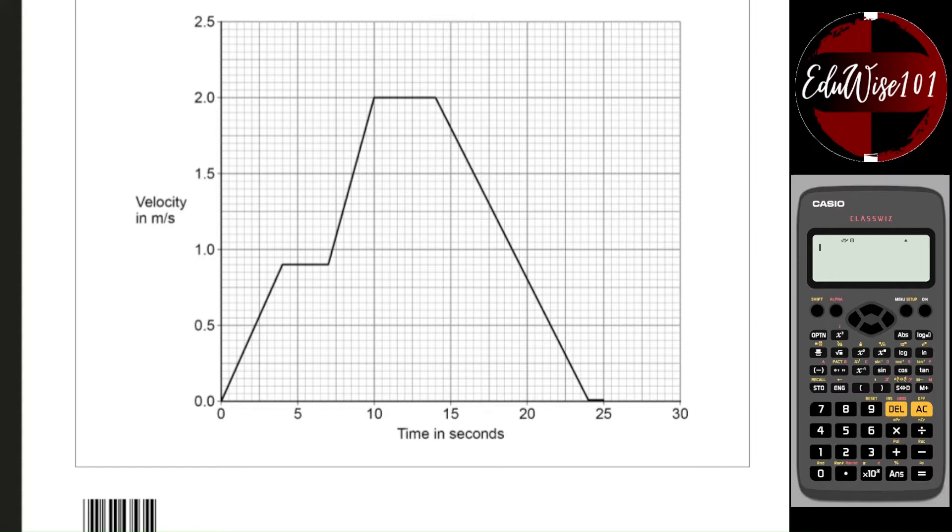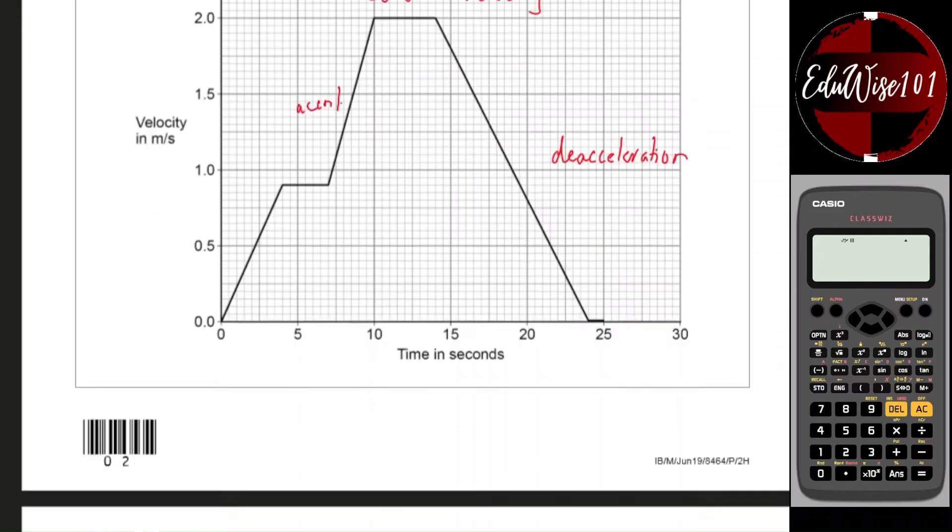So when it's a flat line it should be constant velocity here, so if I label these parts: constant velocity where it's a flat line. This velocity is increasing so these two are acceleration, and this velocity is actually going down so this is deceleration here.